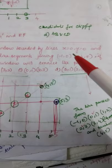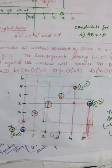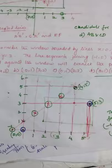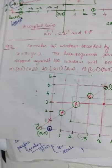Another example: consider a window bounded by lines x=0, y=0, x=5, and y=3. The line segment joining (-1, 0) and (4, 5) is clipped against the window. We need to find which pair of points the clipped line will connect, from the given options A, B, C, and D. Let us draw the graph using the window bounds (0,0) and (5,3) and check all four given point pairs.